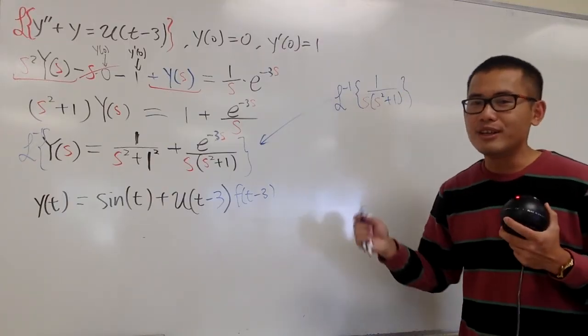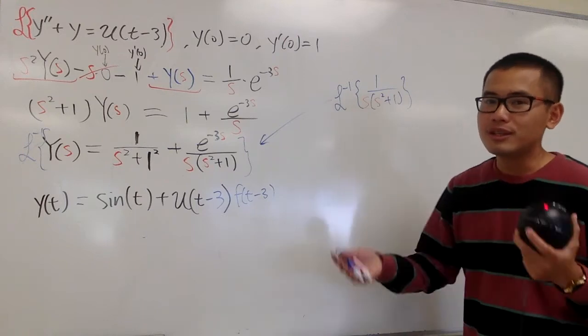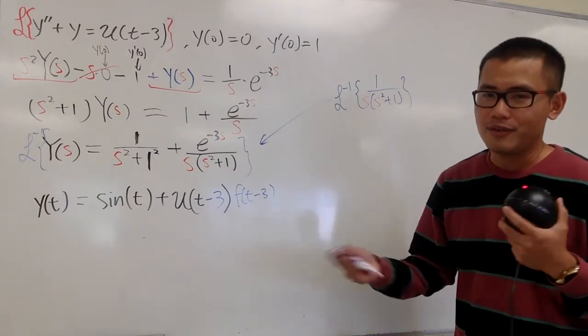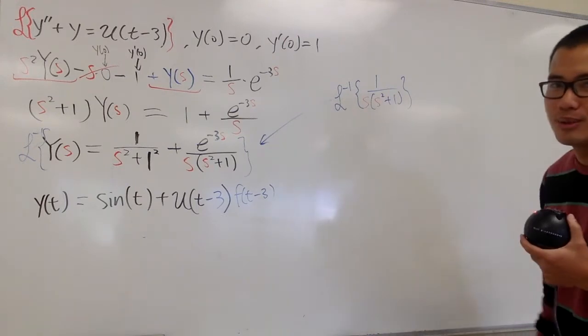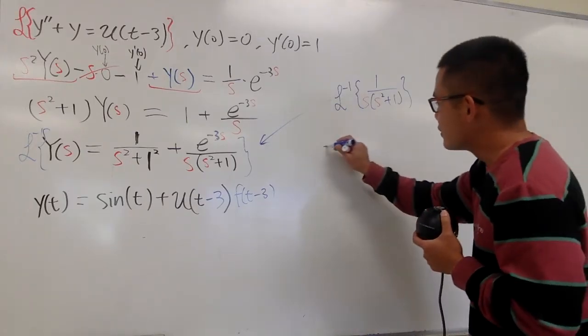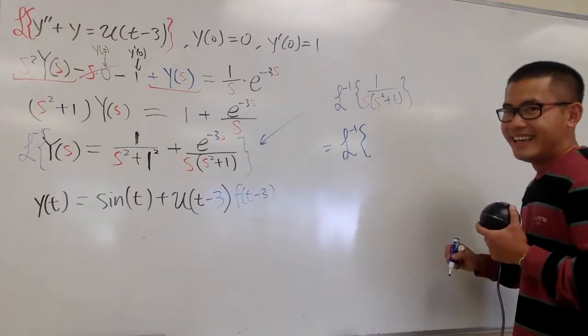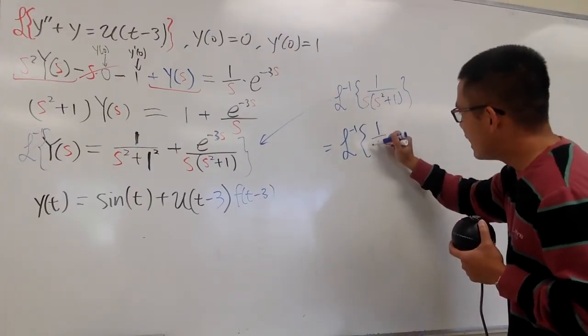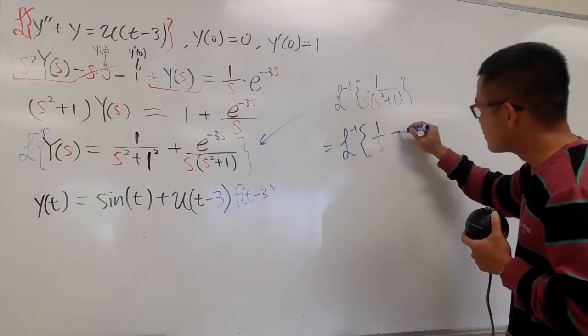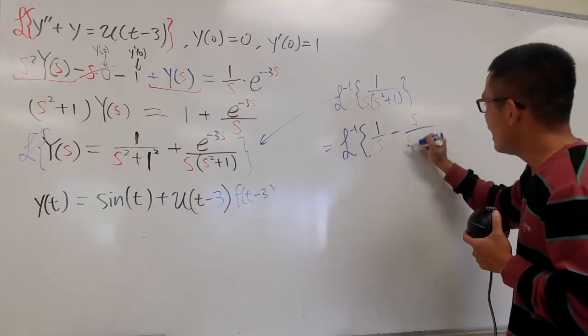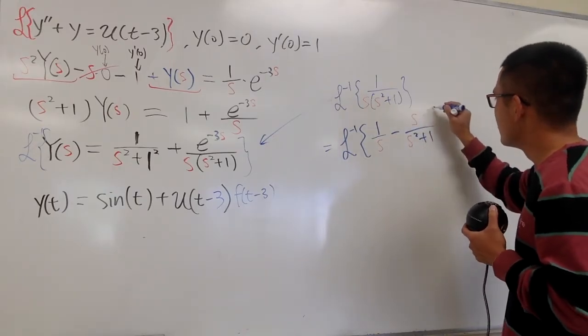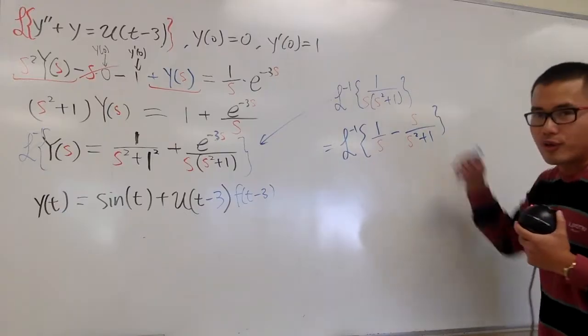You can check out the video in the description. I'll show you guys how to do the partial fraction in a different video, because I wouldn't have enough space to do all that for you guys right here. So just please watch the video, or better yet, try this on your own. And either way, you're going to end up with 1 over S, and then you're going to subtract S over S squared plus 1. Once again, just by partial fraction.